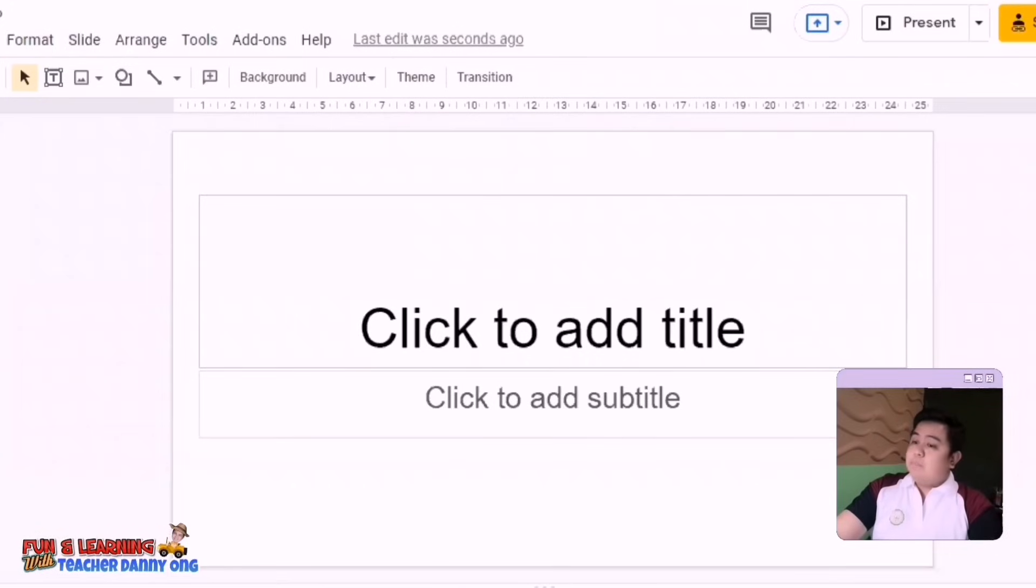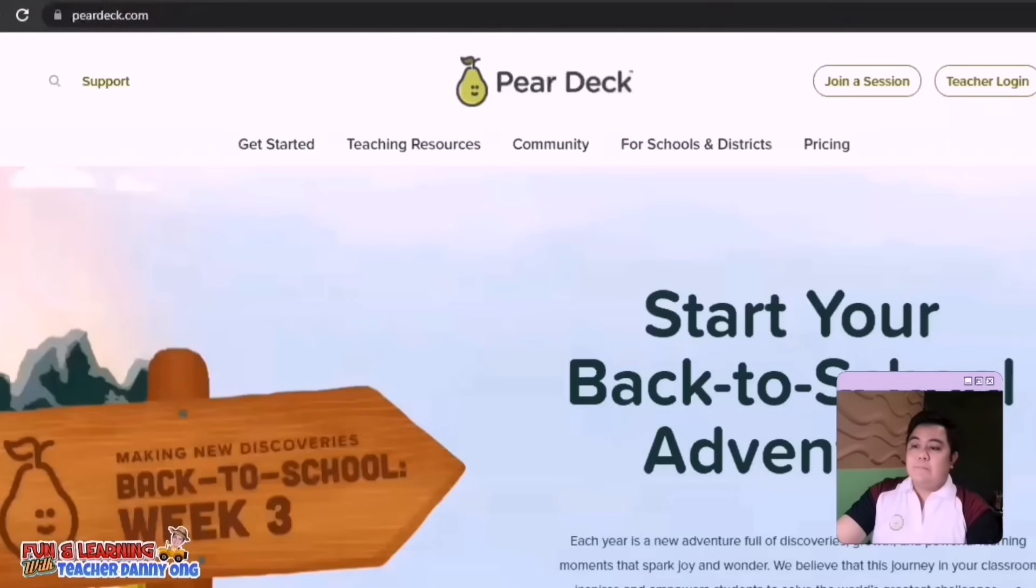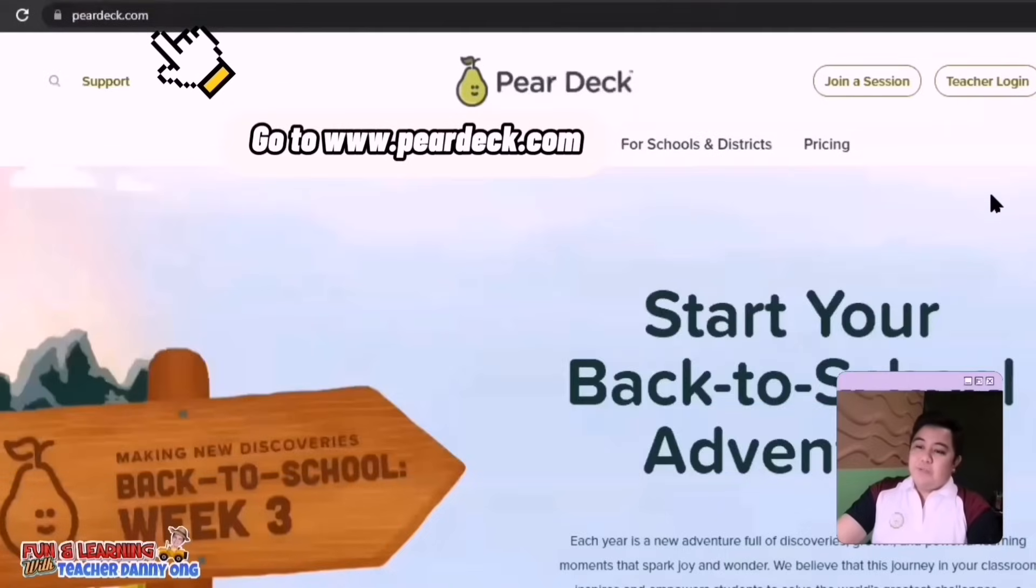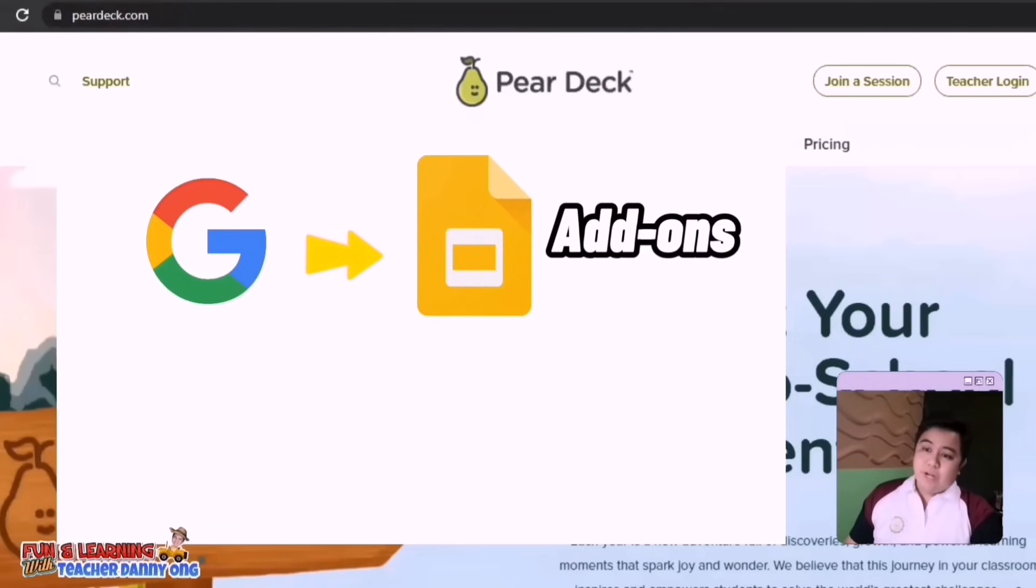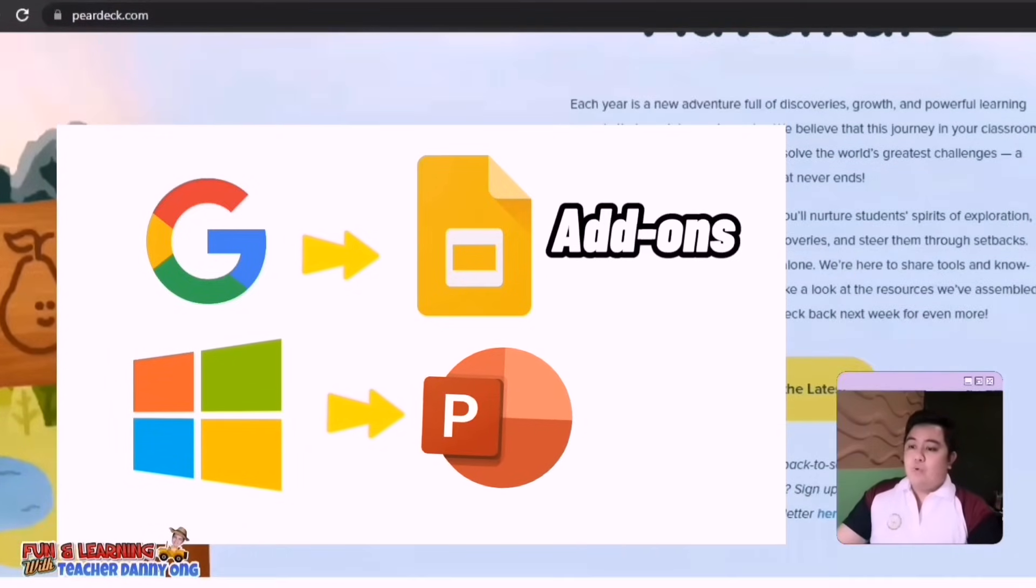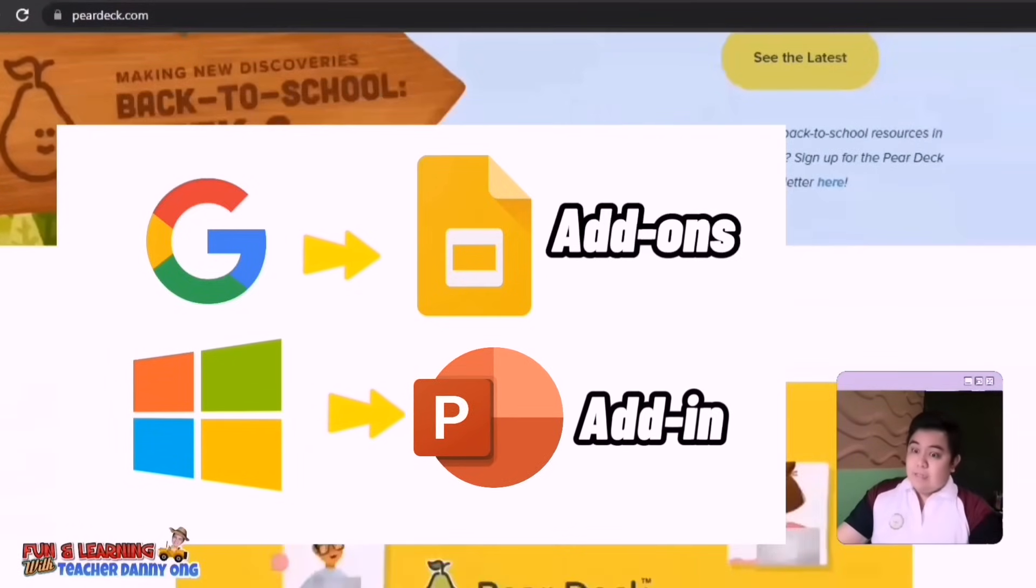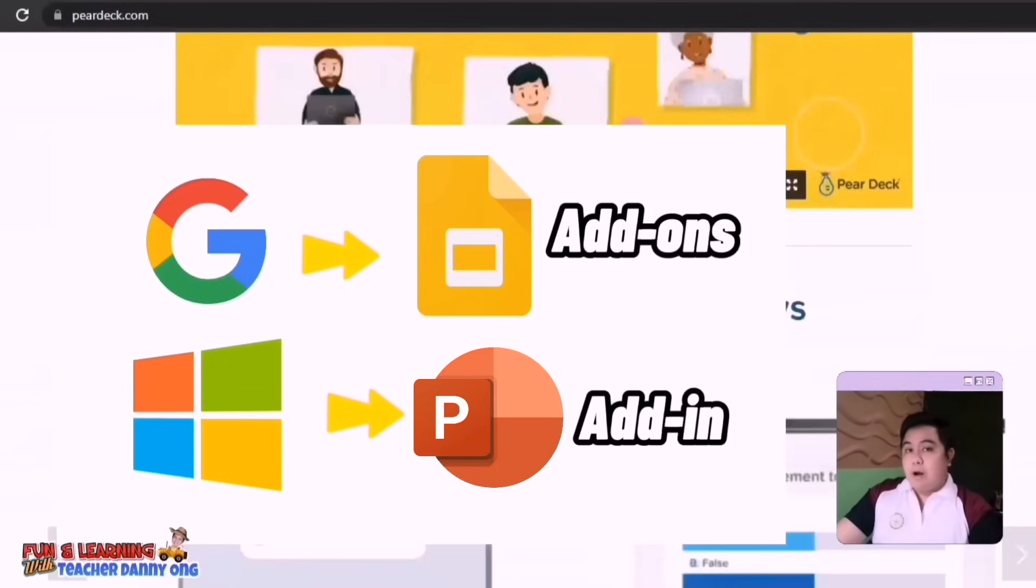Now here's an example of Google Slides. And for step two, this is to create your PeerDeck account with Google or Microsoft Office 365 email addresses. And here's a catch. To get PeerDeck, if you create your account with Google email address, you can get the PeerDeck for Google Slides add-on. But if you create your account with Microsoft 365 email address, you can get the PeerDeck for PowerPoint online add-in. But please note that PeerDeck is only available in the online version of PowerPoint at this time.